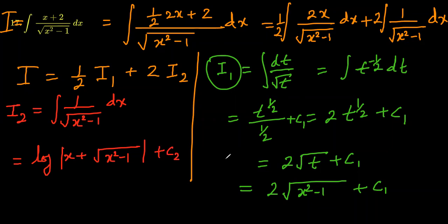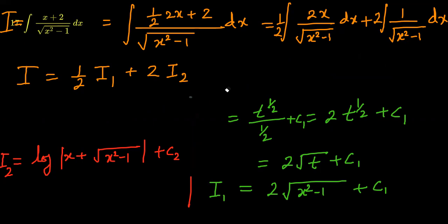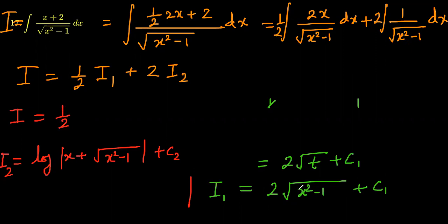We now have the values of i1 and i2. Substituting back, i equals one half times i1, which is 2 times square root of x squared minus 1 plus c1, plus 2 times i2. Opening the bracket, one half times 2 gives simply square root of x squared minus 1, plus 2 times log of x plus square root of x squared minus 1, plus c2.